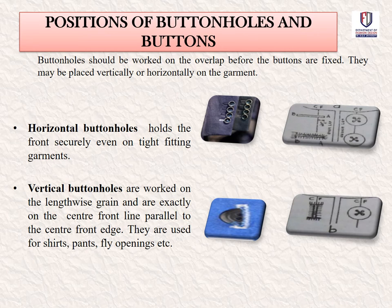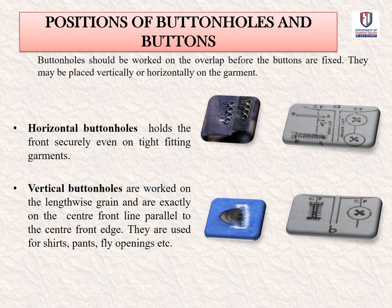Buttonholes should be worked on the overlap before the buttons are fixed. They may be placed vertically or horizontally on the garment. A horizontal buttonhole holds the front securely even on tight-fitting garments. Vertical buttonholes are worked on the lengthwise grain and are exactly on the center front line, parallel to the center front edge. They are used for shorts, pants, fly openings, etc.